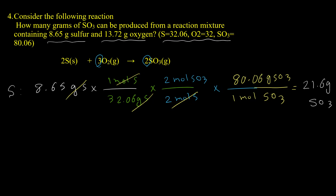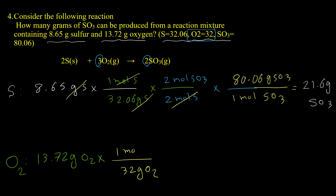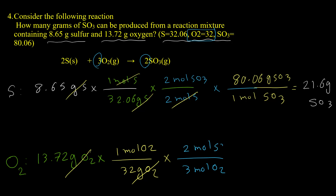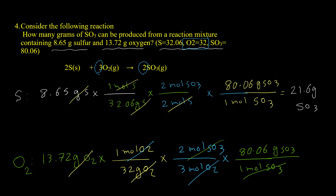Now using the oxygen value: 13.72 g O₂ × (1 mol O₂ / 32 g) × (2 mol SO₃ / 3 mol O₂) × (80.06 g SO₃ / 1 mol SO₃) = 22.9 grams SO₃. Comparing the two results, 21.6 grams is smaller, so that is the actual answer. This also tells us that sulfur is the limiting reactant in this reaction.